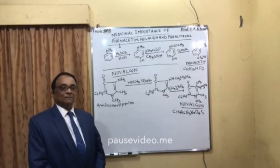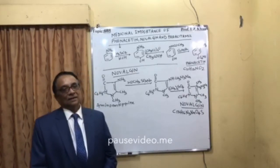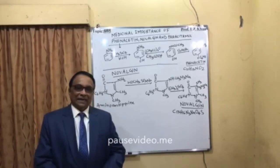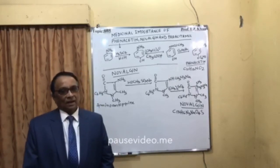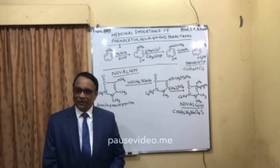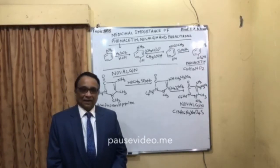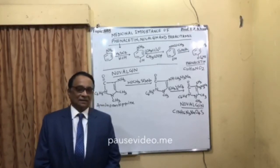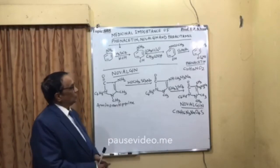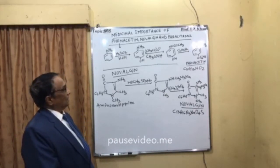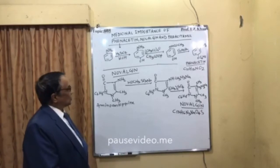Phenacetin is the derivative of aminophenol. This aminophenol is produced in our body when acetamide is oxidized. This aminophenol is itself antipyretic, and from aminophenol, acetylation is done with a substituent to form phenacetin. Its molecular formula is C10H13NO2.